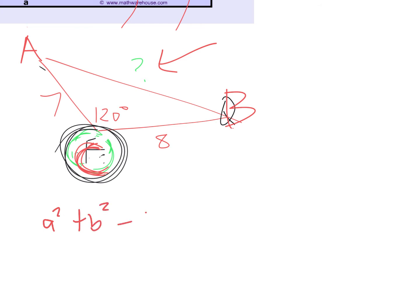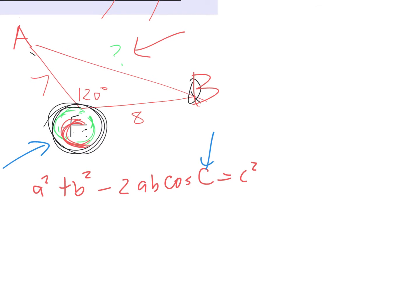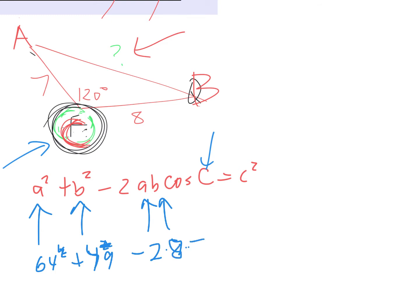Let's solve for the unknown side using Law of Cosines. The formula is: a squared plus b squared minus 2ab cosine of big C equals little c squared. The angle C is the only angle in the whole problem — that's why it must be C. It doesn't matter which of the other two sides you call A or B, because seven times eight equals eight times seven — same answer either way.